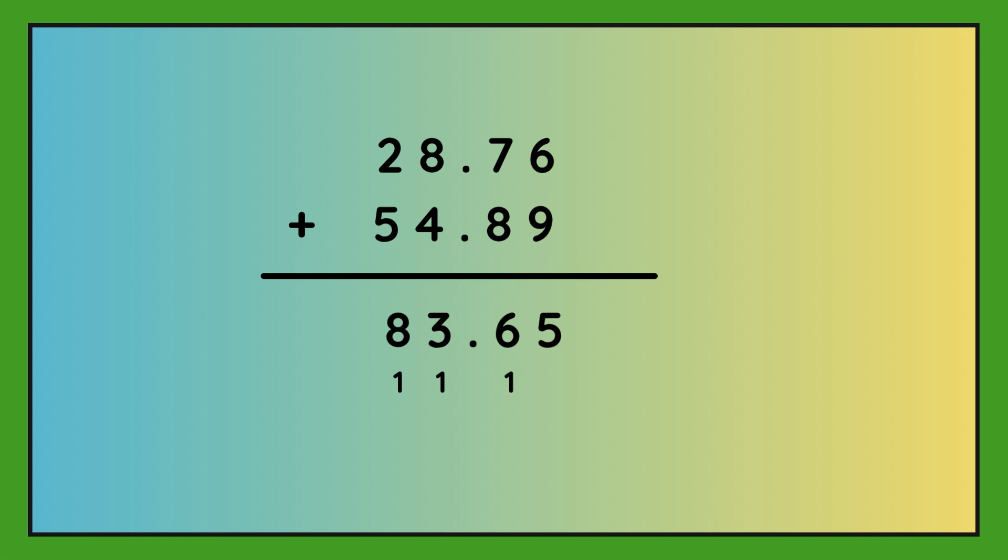The answer is 83.65. So let's do it together. 6 plus 9 is 15. So pop 5 in, carry 1 over. 7 plus 8 plus 1 is 16. So pop 6 in, carry 1 over. 8 plus 4 plus 1 is 13. So pop 3 in and carry 1 over. And then 2 plus 5 plus 1 is 8. So the answer is 83.65.